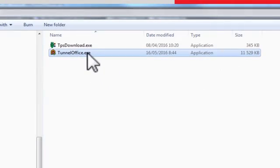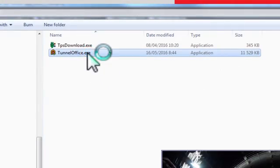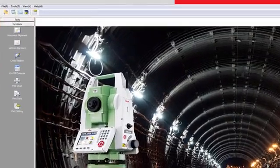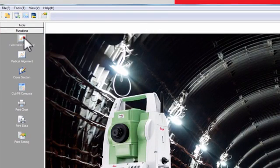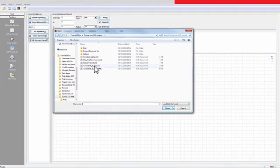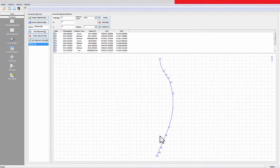To start the tunnel office software, double click on the tunneloffice.exe file. On the left side, there are various functions and tools available. Clicking on horizontal alignment, you can import the horizontal part of the alignment by choosing an XML file. Once imported, you will see a graphical view of the alignment as well as the details of the alignment elements.